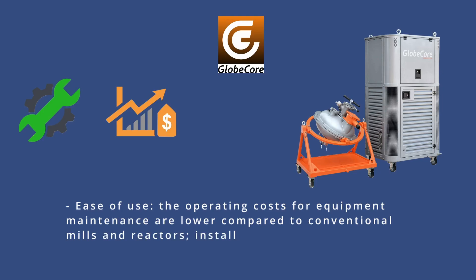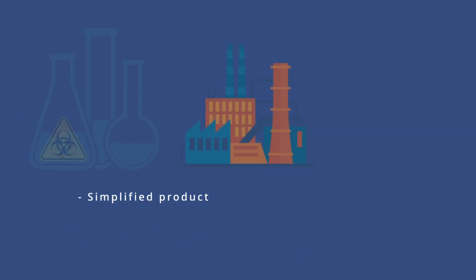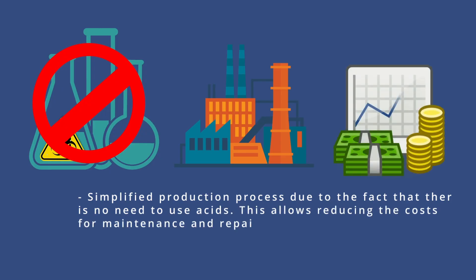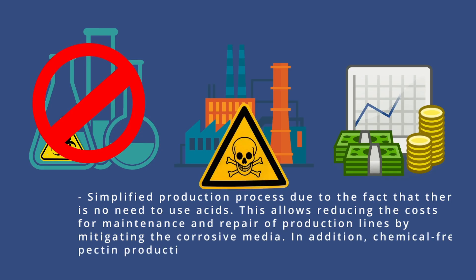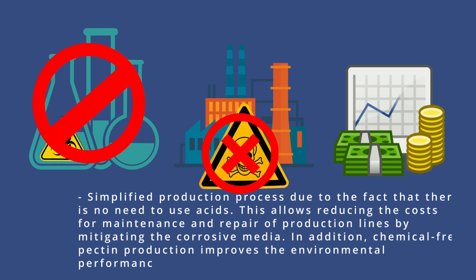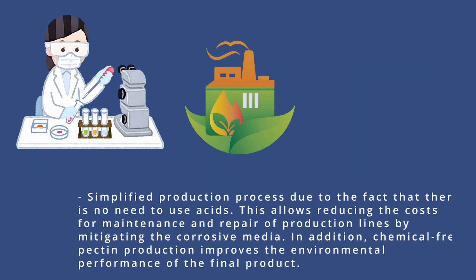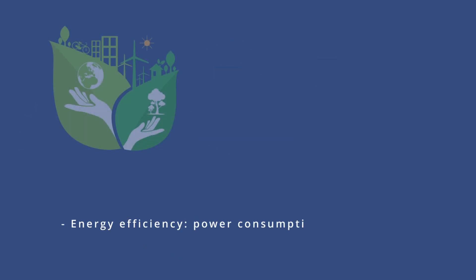Installing a vortex layer device requires no special pedestal. The simplified production process eliminates the need to use acids, which reduces costs for maintenance and repair of production lines by mitigating corrosive media. In addition, chemical-free pectin production improves the environmental performance of the final product.